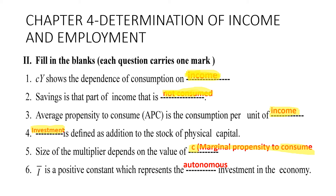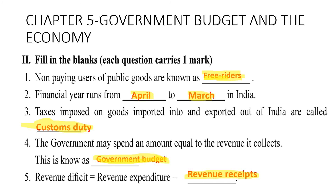Sixth: I-bar is a positive constant which represents autonomous investment in the economy. This is it for chapter four.